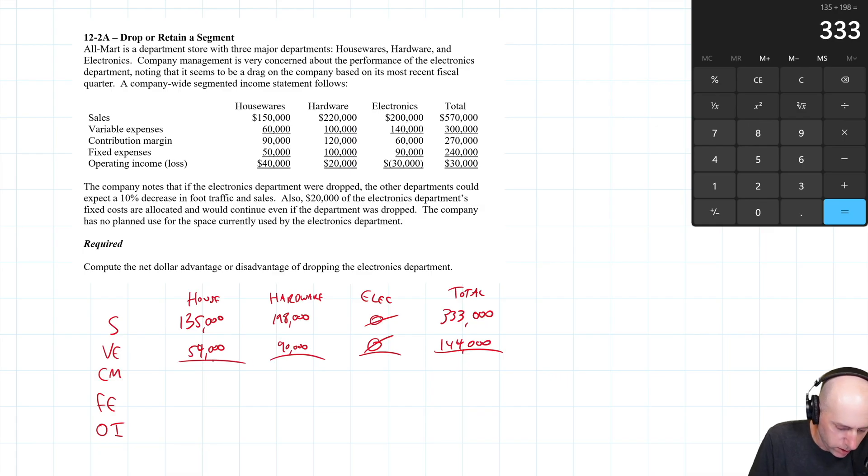Let's total these. 135 minus 54, $81,000 is our contribution margin for housewares. For hardware, 198 minus 90 is 108. And electronics has zero contribution margin because it's not contributing anymore. $189,000.